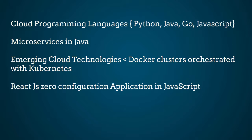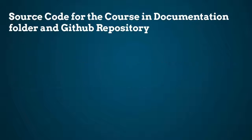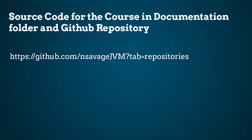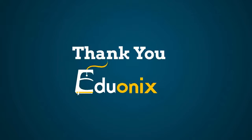We will create microservices in Java. We will create deployment tools in Go and Python. We will create ReactJS zero configuration applications in JavaScript, and ReactJS server-side rendering applications. During the course, as we develop applications, you will be able to find the source code in the documentation folder for the section. There will also be a link to an online GitHub repository for the source code.